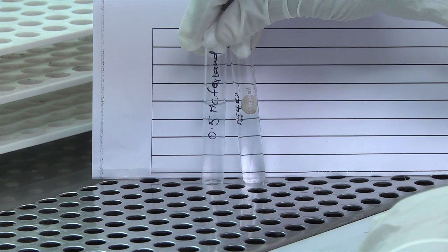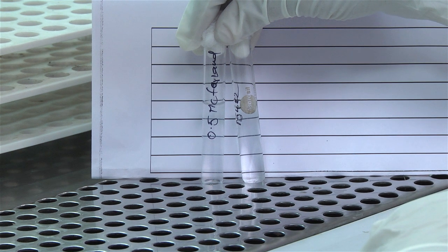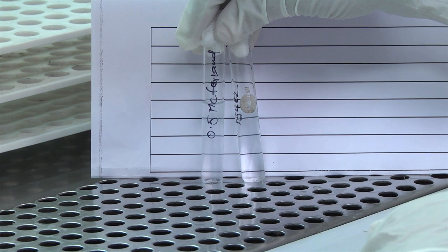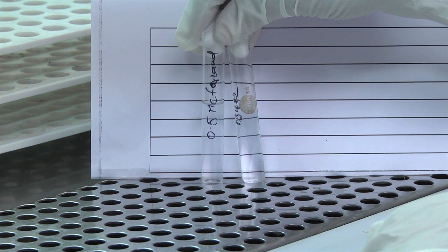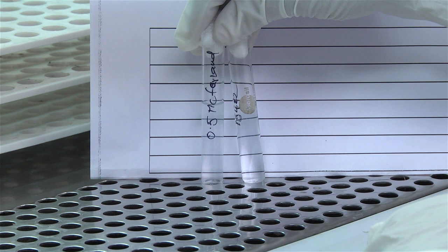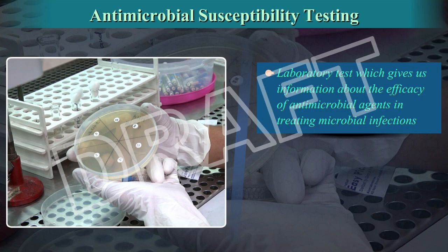Match the turbidity of the suspension to the 0.5 McFarland turbidity standard in good light. Mix the standard immediately before use. When comparing turbidities, it is easier to view against a printed sheet of paper. Label the base of the Mueller-Hinton plate with sample details.